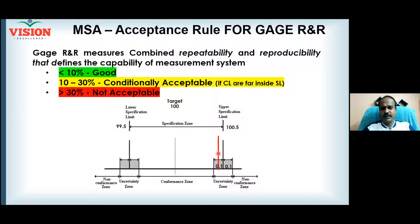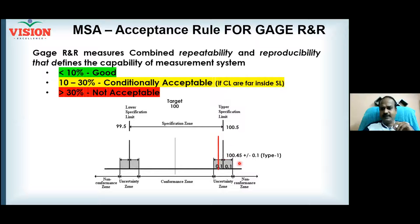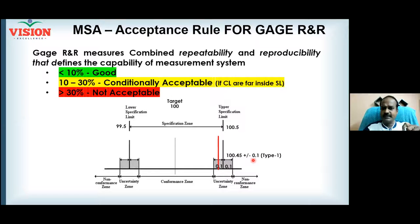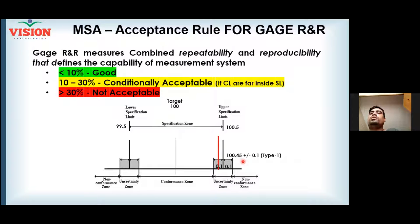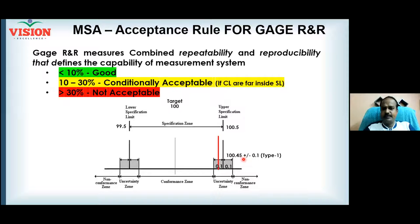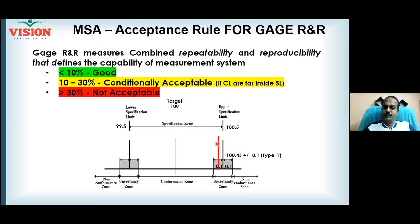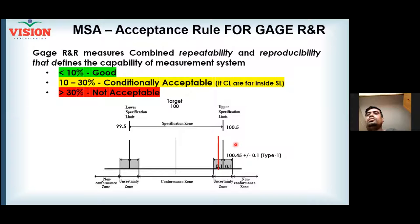Imagine your reading is 100.45 and the customer limit is 100.5. The actual size of the product is 100.45. But with a 10% error — which equals 0.1 — the operator may measure it as 100.45 ± 0.1. If they measure it as 100.45 + 0.1, the reading becomes 100.55, which falls outside the spec. As a result, the product gets rejected — even though the reality is that the product is good and within specification. The rejection happens purely because of measurement error.